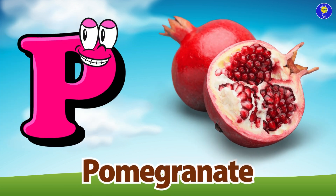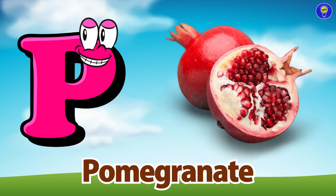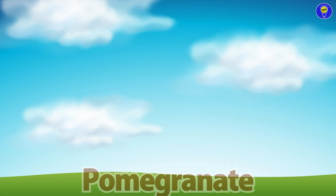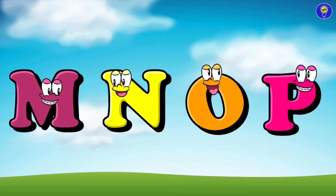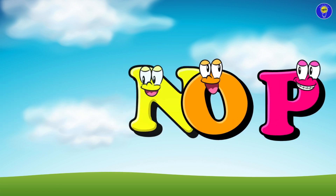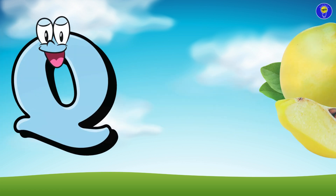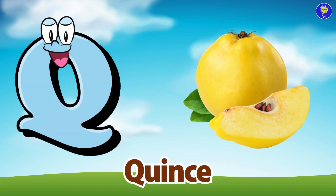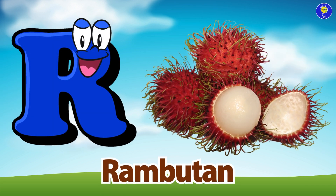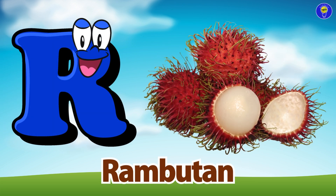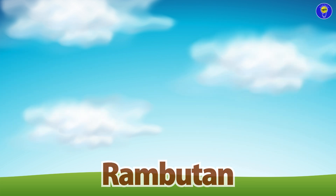P is for pomegranate. Puh, pomegranate. Q is for quince. Quh, quince. R is for rambutan. R, rambutan.